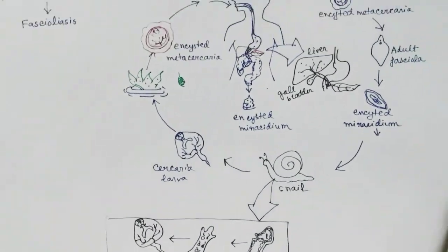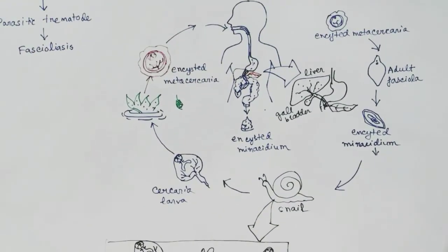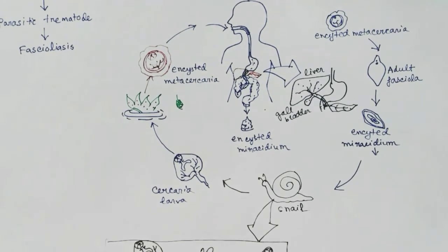In the water plants, the cercaria larva forms the metacercaria cyst. These cysts remain in the water plants. When these water plants are consumed raw or not well cooked, the cysts enter the body of the human or cattle and cause fasciolosis.